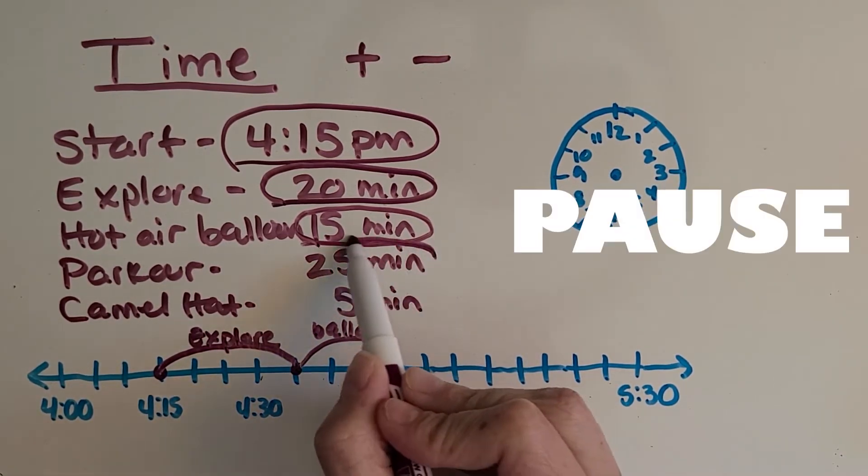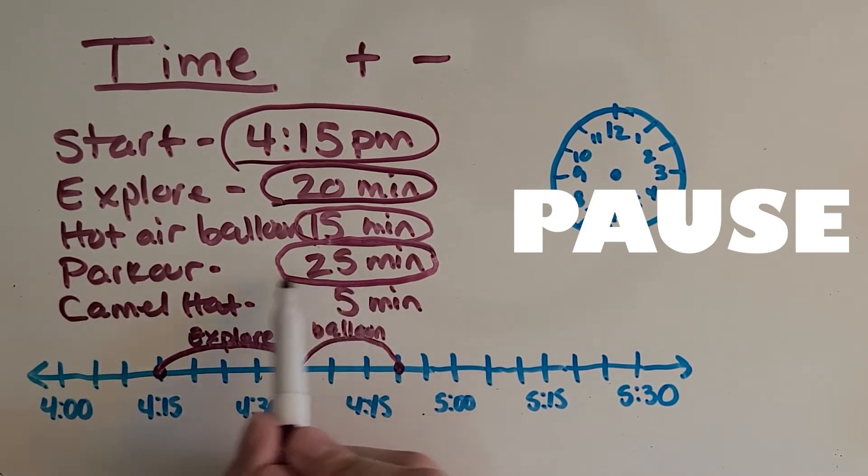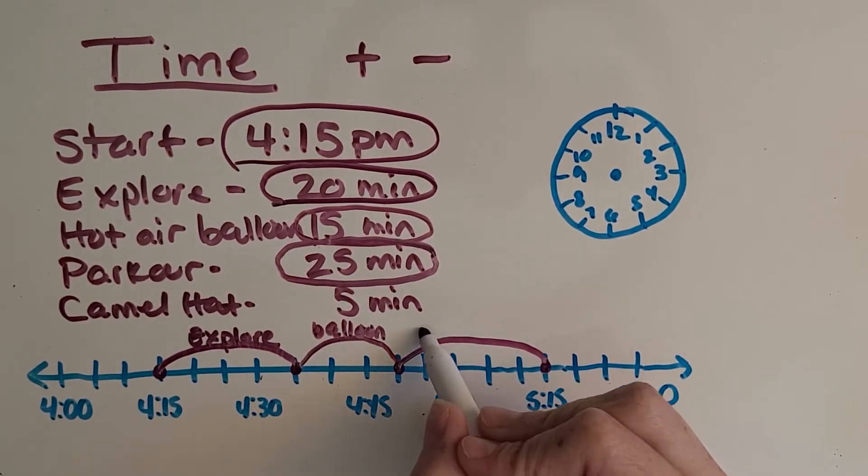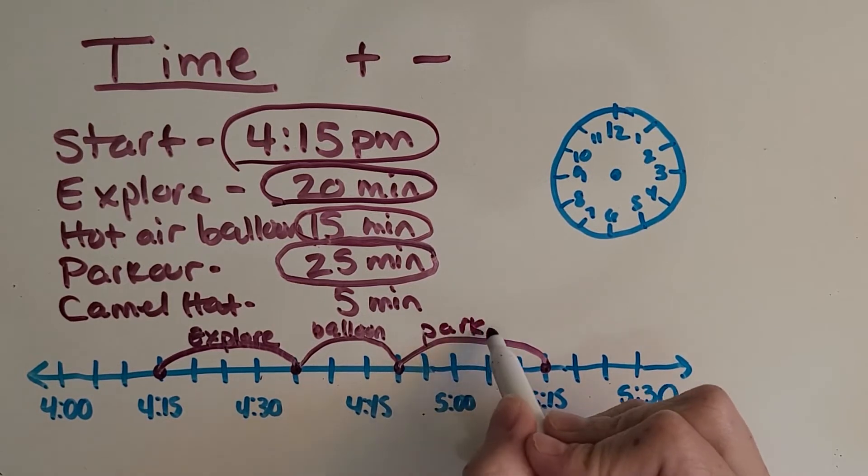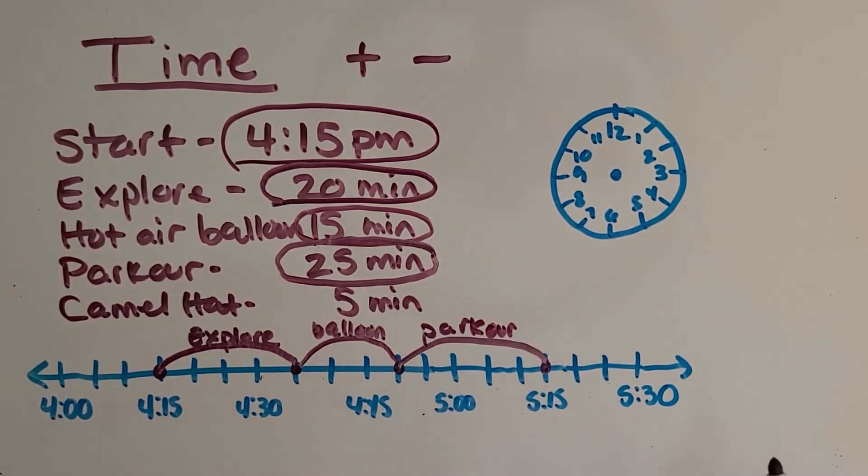Okay, now I want you to pause the video again and do the parkour event for 25 minutes. Okay, let's check your work. 5, 10, 15, 20, 25. Okay, parkour took the longest because I kept doing the event over and over again. Okay, now we're at 5:15 exactly.